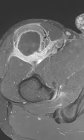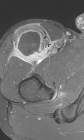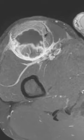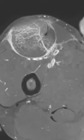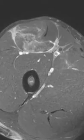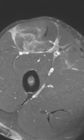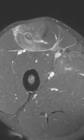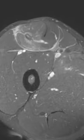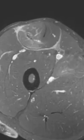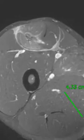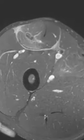Up here we can see this well-defined fluid collection — a hematoma. This is the direct head around the periphery; some of the fiber is still intact. The more central part of the muscle is torn. Coming down, we get into the indirect head. You can see how that indirect tendon is retracted distally because of the muscle tear, and there's a little muscle strain surrounding the central tendon there.